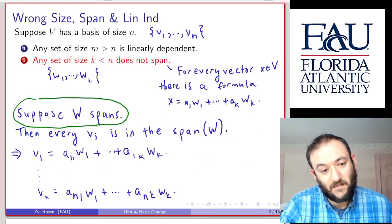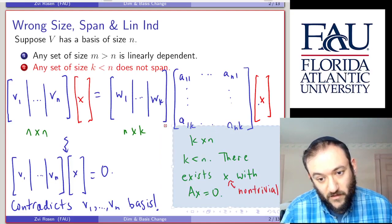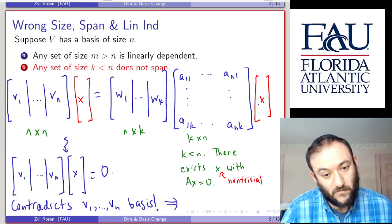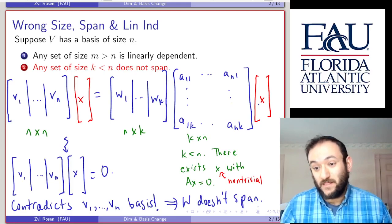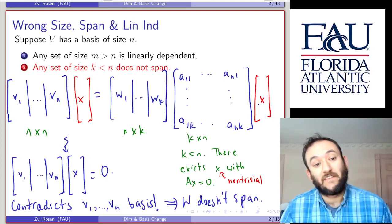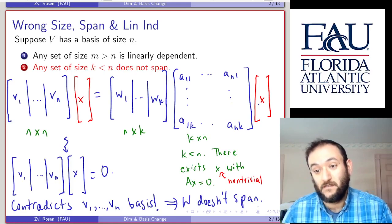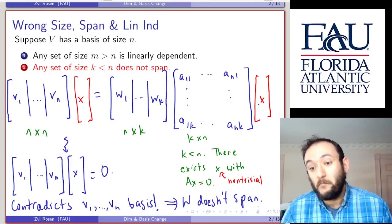We conclude that W does not span. So we've learned: if a set is too big, it won't be linearly independent (it will be linearly dependent); if it's too small, it won't span. Therefore the only sets that are bases — both linearly independent and spanning — must have size n.